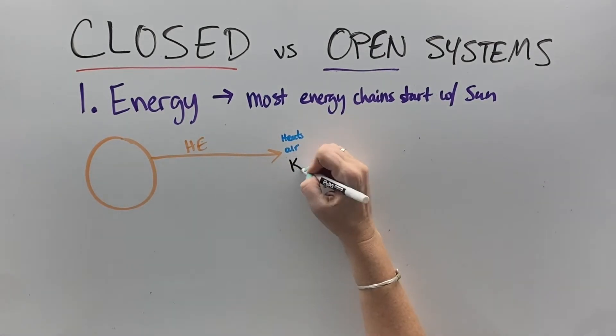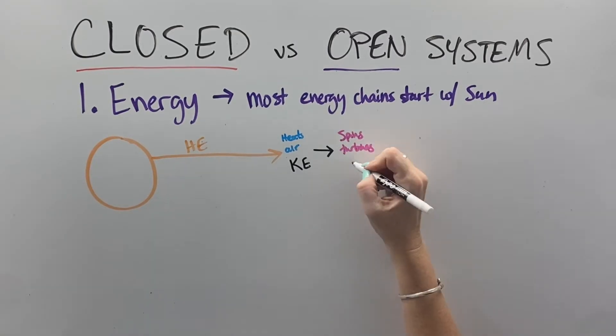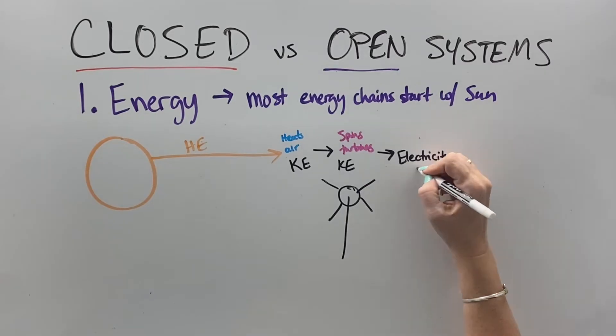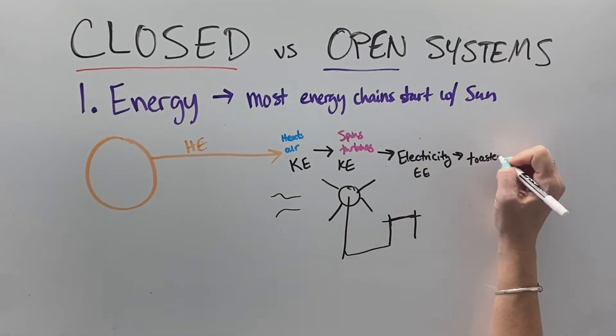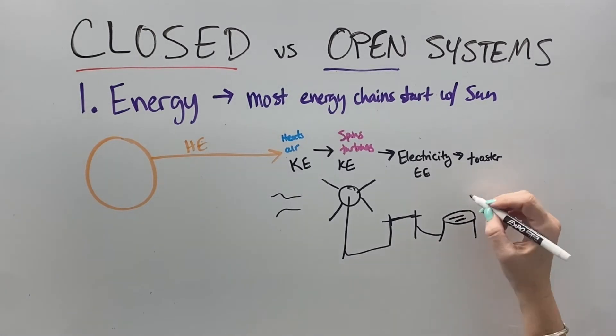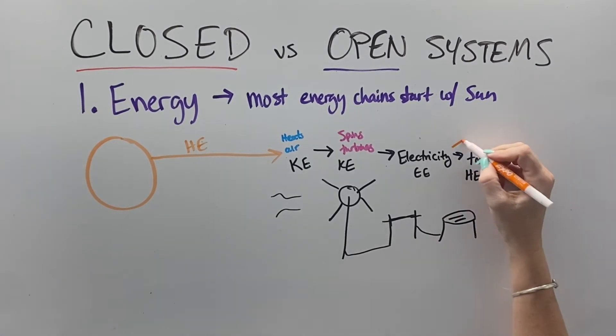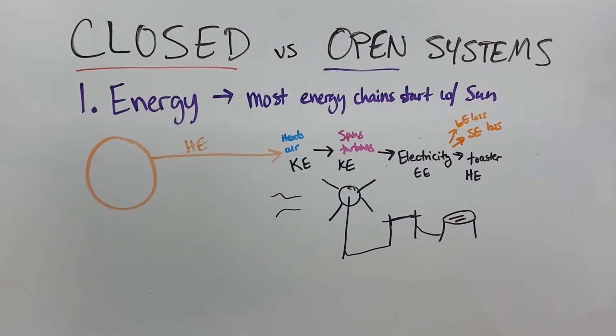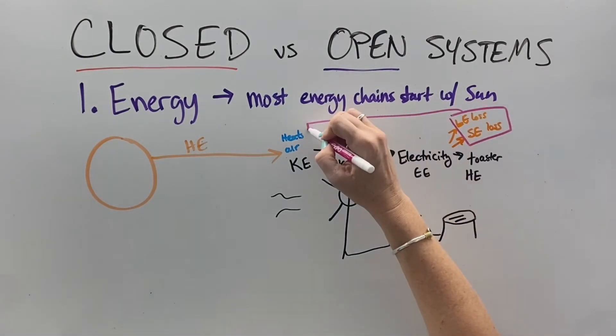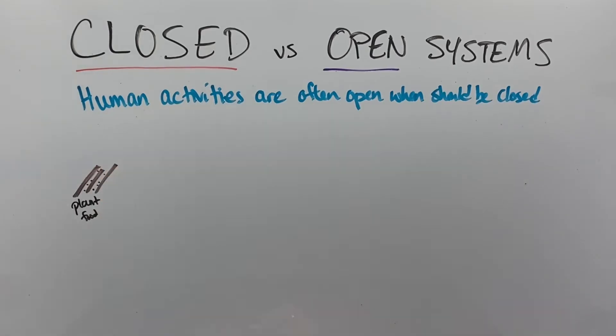For example, the heat comes into the earth and starts heating up the air. The particles move faster and faster. We get kinetic energy as wind. That wind hits a turbine. Kinetic energy turns into electrical energy inside of that generator. The electricity can go to your toaster and then the heat in that toaster can make your toast. Those chains that we have, light and sound are lost. Those go back into the atmosphere and eventually back out.